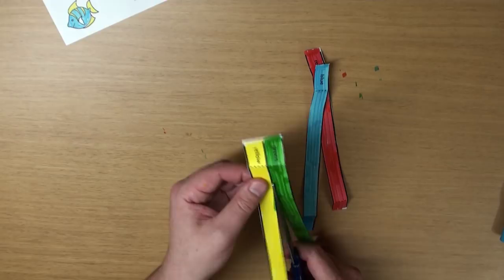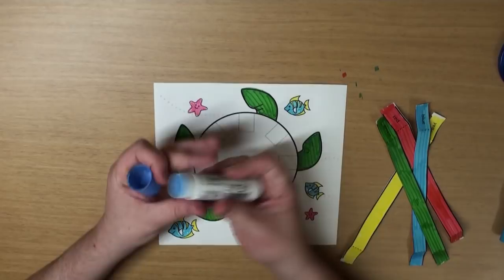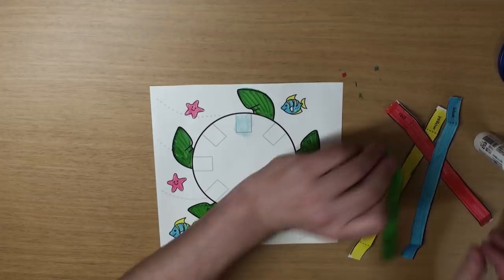Now grab some glue. Put some glue on one square, and some glue on the square on the other side of it, okay? Grab one strip and glue it on just like this. That was easy, eh? Let's do it again.